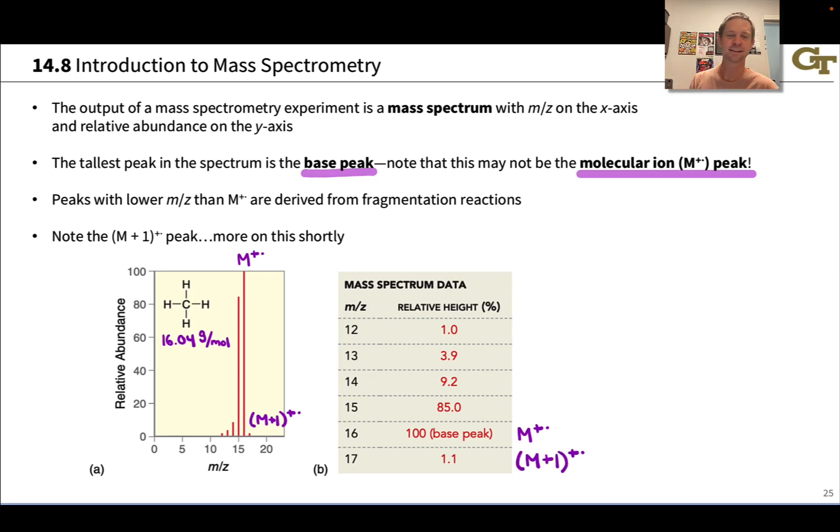We tend to see clusters around various regions of a mass spectrum often because hydrogen atoms are readily lost to produce smaller cations.